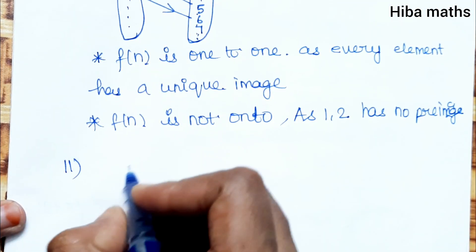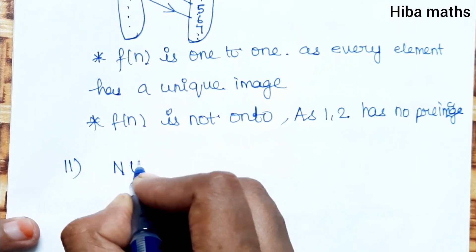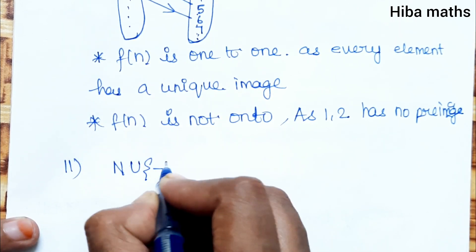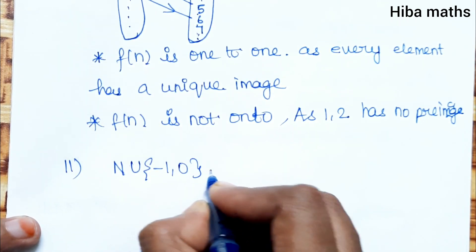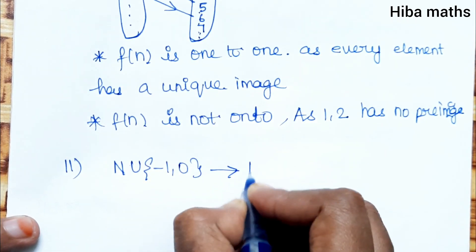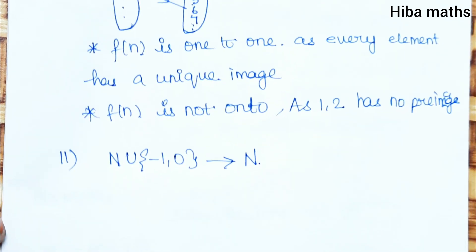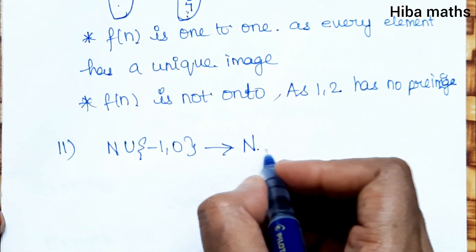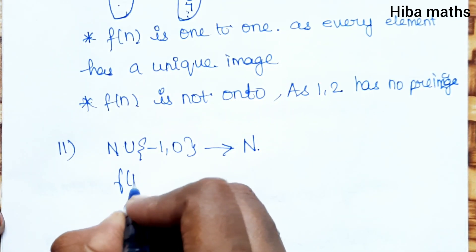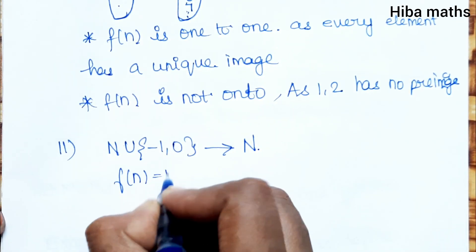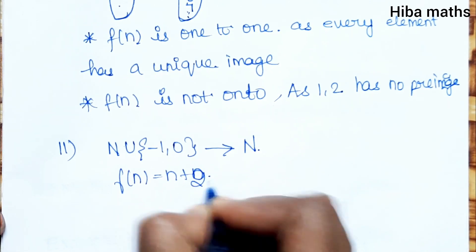Second question: the domain is the natural numbers union {-1, 0}, which includes -1 and 0. The function maps to natural numbers again. The function is f(n) = n + 2.